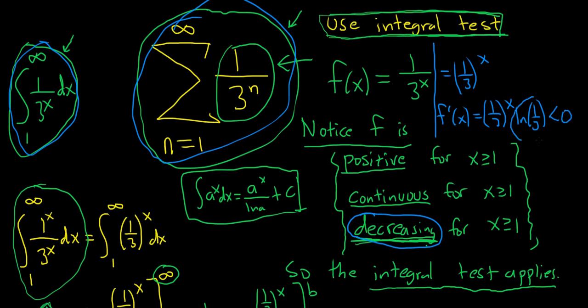And the reason is ln one-third is a negative number. If you think about the graph of the natural log, it has an x-intercept at one and it has a vertical asymptote at zero. So the natural log of any number between zero and one in this green area is going to be negative. So you have one-third to the x times a negative number, which gives you a negative result, which means that your first derivative is negative, which means that your function is decreasing.